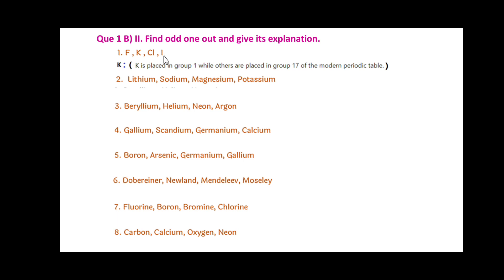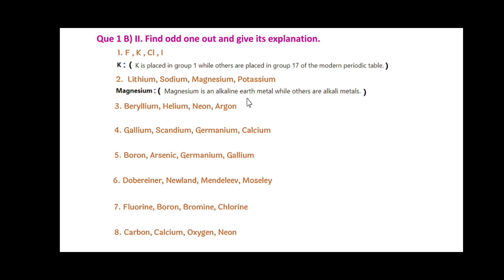Group 17 belongs to the halogen family — that is, Fluorine, Chlorine and Iodine. Second question: Lithium, Sodium, Magnesium and Potassium. Among these, Magnesium is the odd one out. Since Magnesium is an alkaline earth metal, while others are alkali metals.